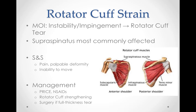A rotator cuff injury can be painful and reduce range of motion. Pain may be described as a dull achy pain in the shoulder, disturb sleep particularly if lying on the affected shoulder, make it difficult to comb or wash hair or reach behind the back, and may be accompanied by arm weakness. PRICE and NSAIDs can help with pain management. Physical therapy exercises can help restore flexibility and strength. Sometimes it is possible to eliminate pain and restore function without surgery. Many different types of surgeries are available, including arthroscopic tendon repair, open tendon repair, bone spur removal, tendon transfer, and shoulder replacement.